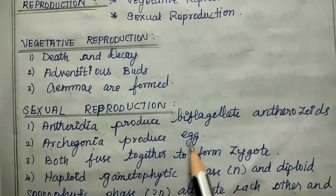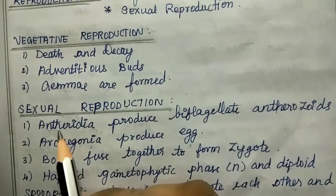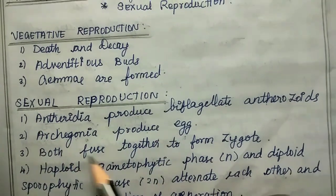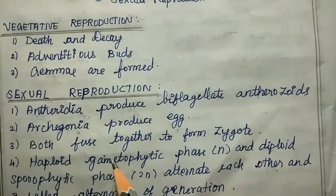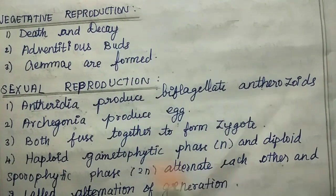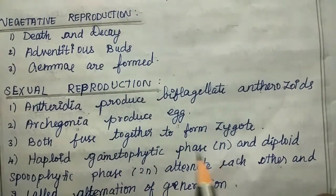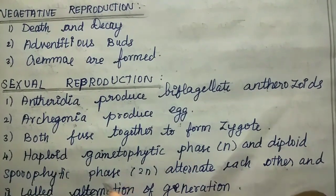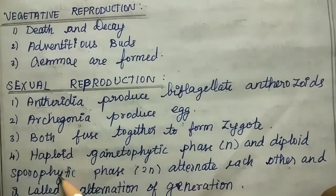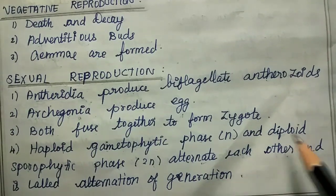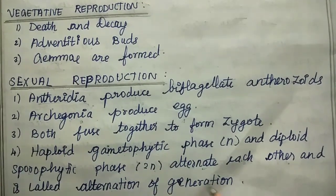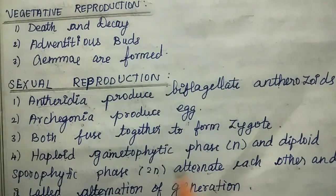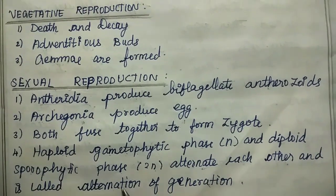Sexual reproduction: antheridia produce biflagellate antherozoids and archegonia produce eggs. Antheridium is male and archegonium is female. Both fuse together to form a zygote. There is alternation of generation — haploid and diploid two phases alternate each other.